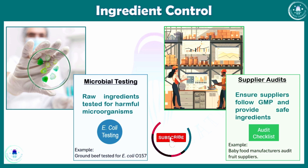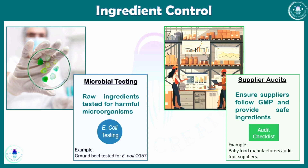The second component of ingredient control is supplier audits — auditing suppliers to ensure they follow GMP and provide safe ingredients. For example, baby food manufacturers audit their suppliers to verify they meet safety standards, ensuring their products are safe for babies and compliant with good manufacturing practices.